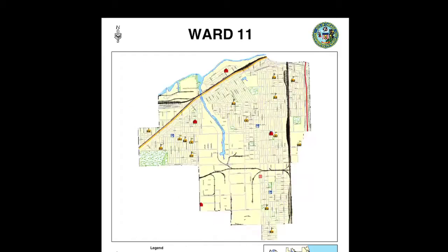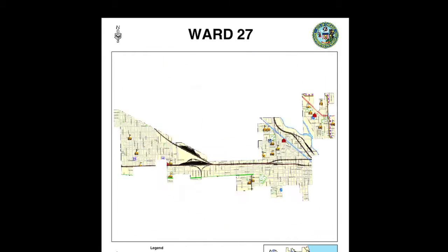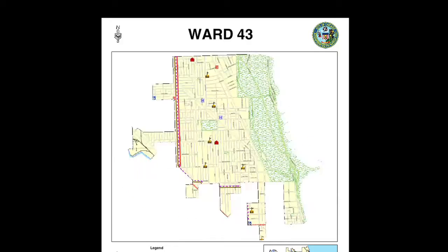A ward - there are 50 wards in Chicago. They're basically political units that an alderman controls, as opposed to community areas, which there are 77 of in the city.